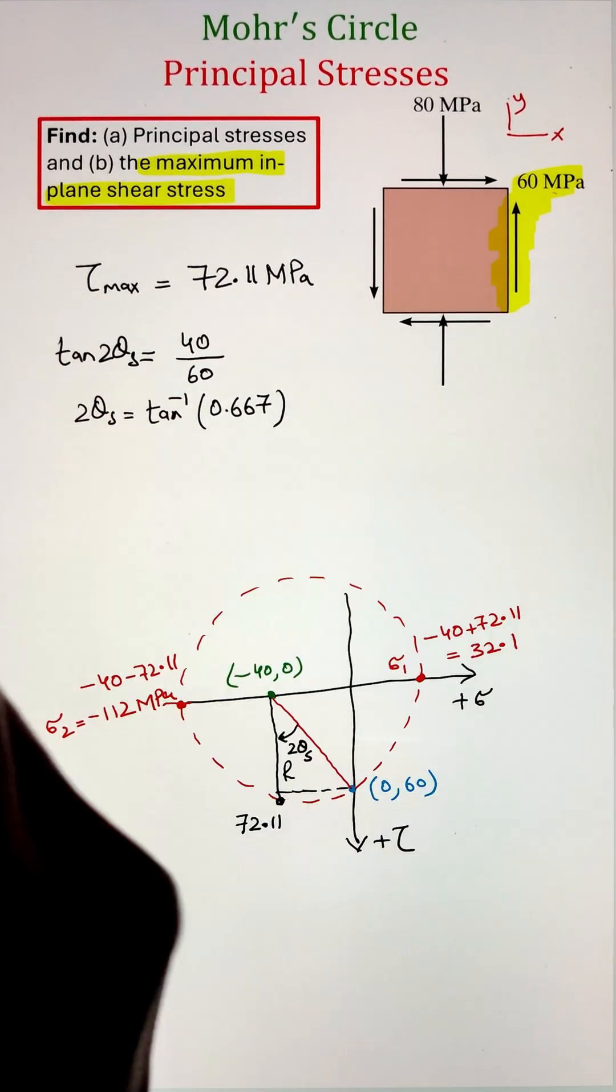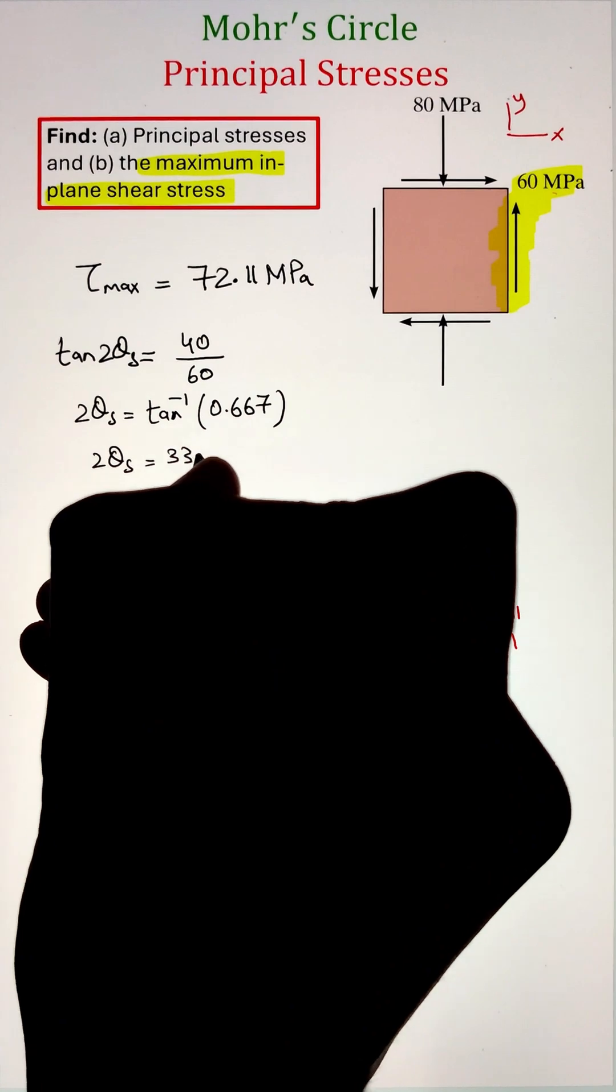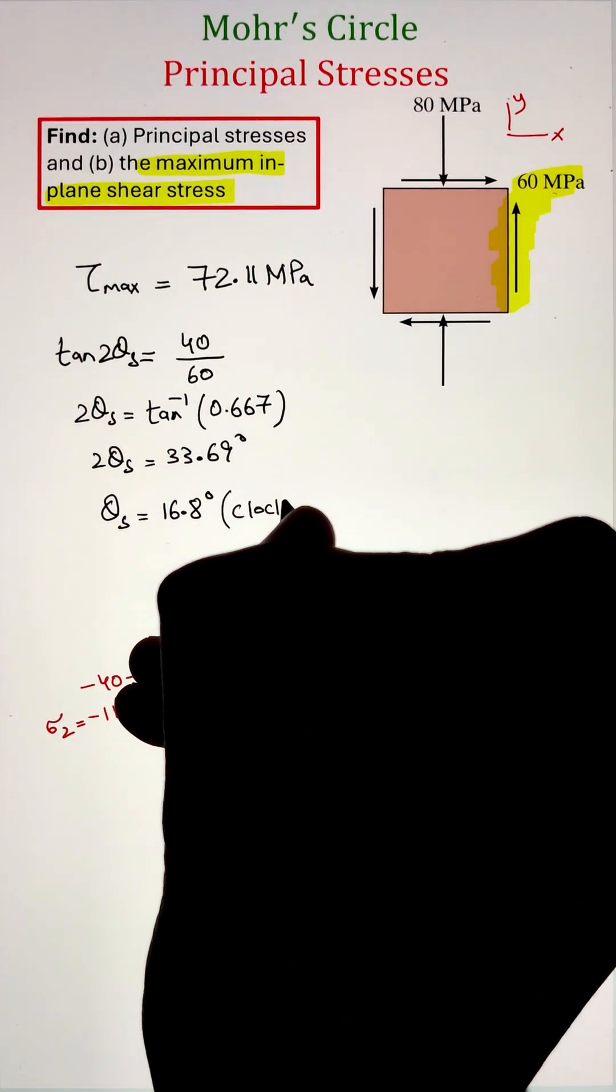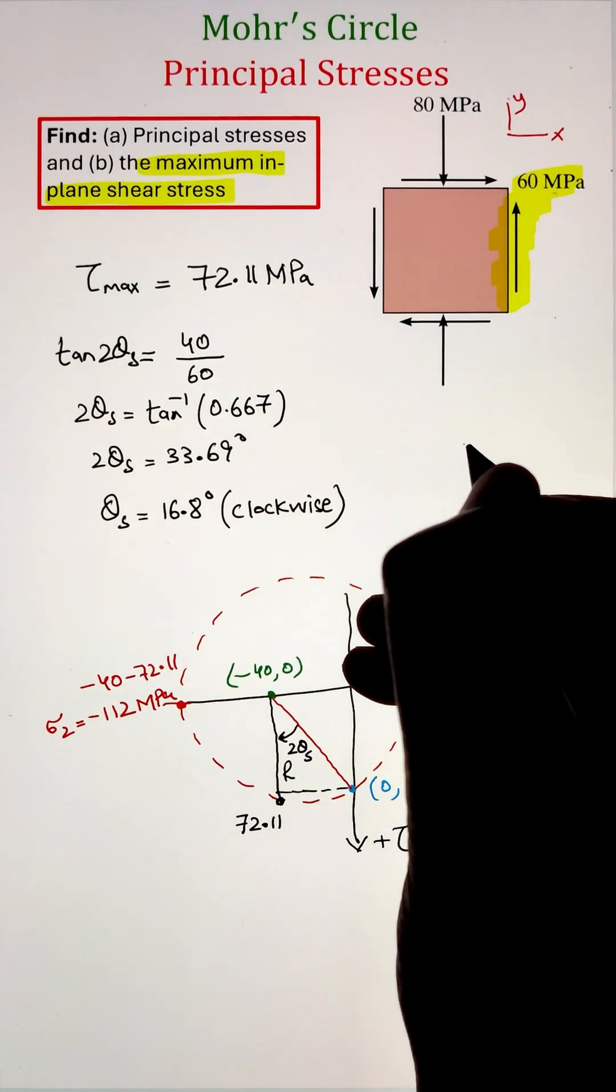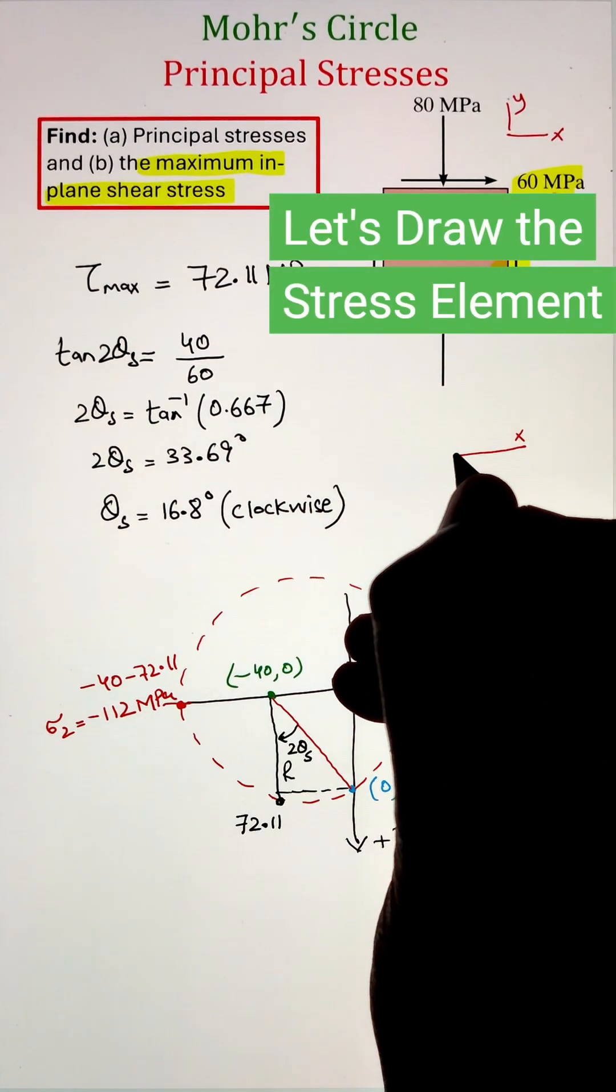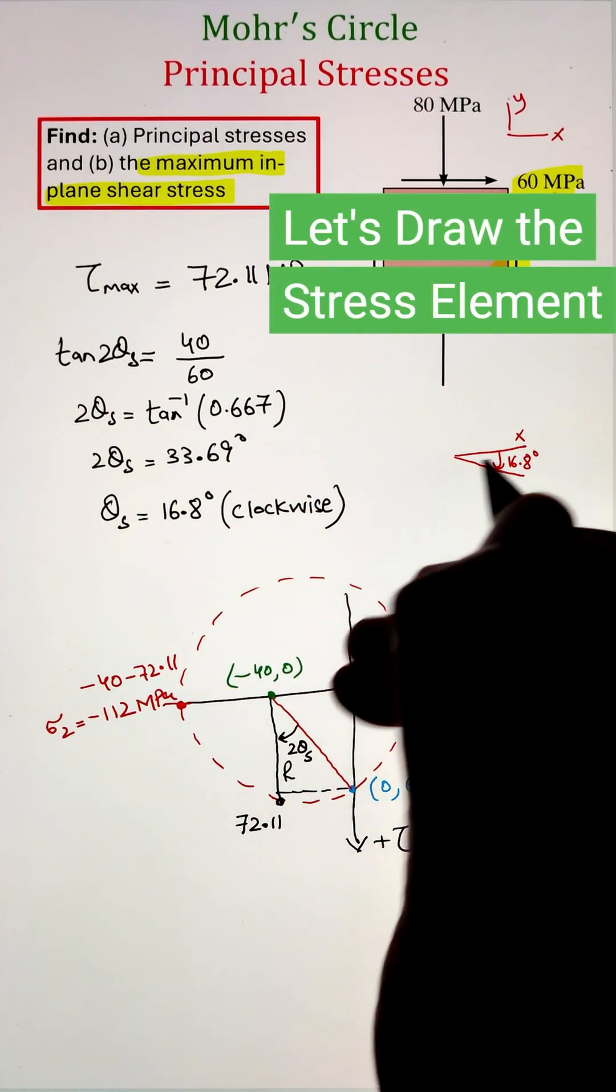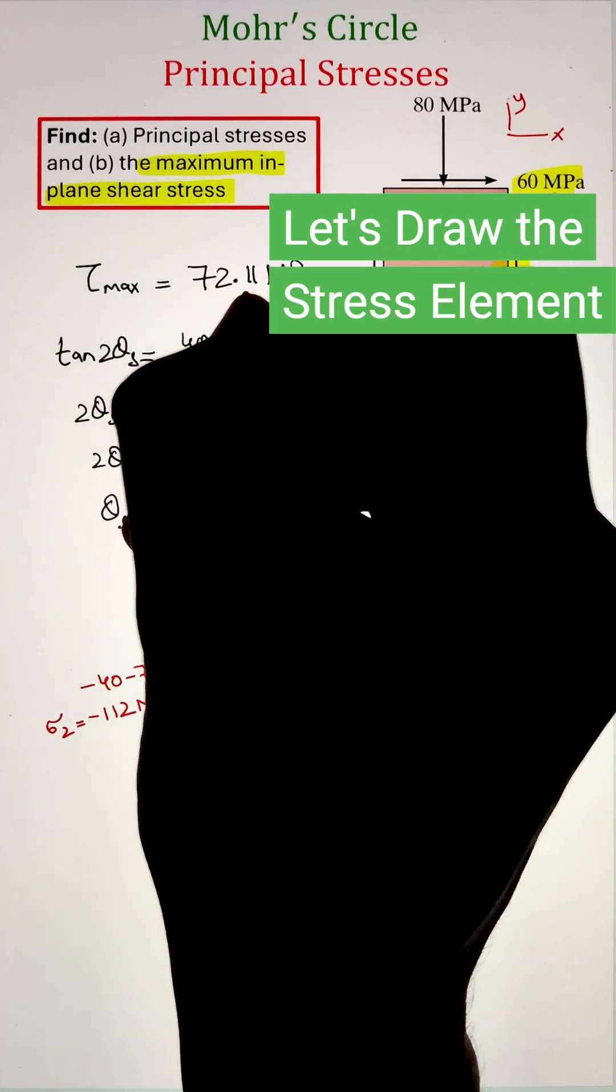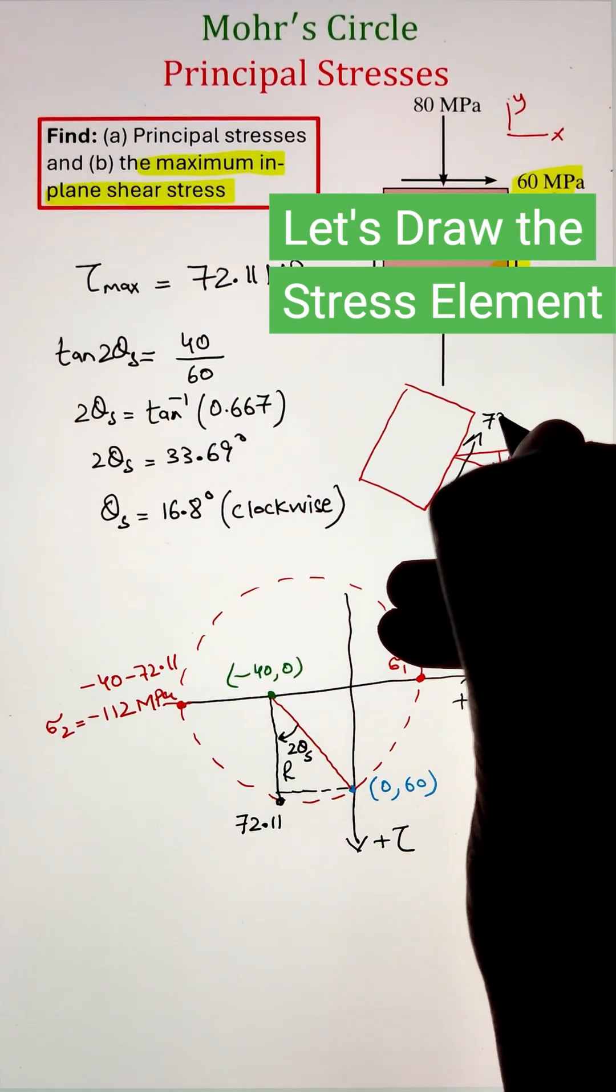Now, we have to halve this angle since we are drawing this on a square element that equals to 16.845 degrees. Now, to draw it on the element since it is in the clockwise direction, from the horizontal X-axis, we are going in the clockwise direction of 16.8 and drawing a square perpendicular to that 16.8 degrees.